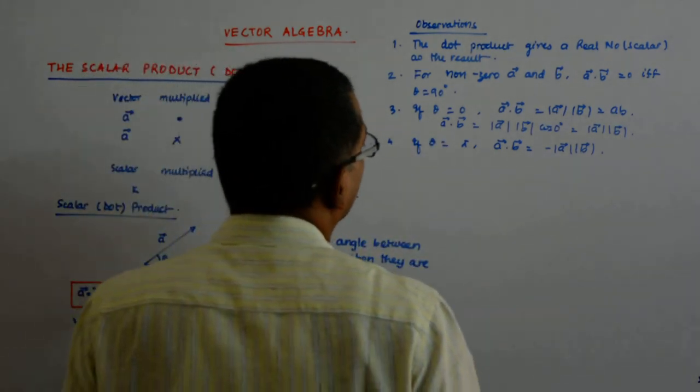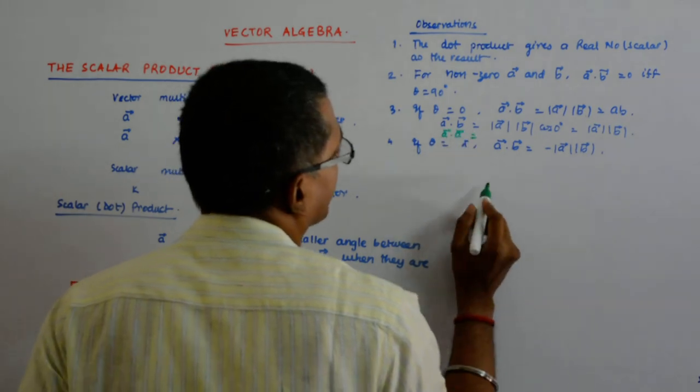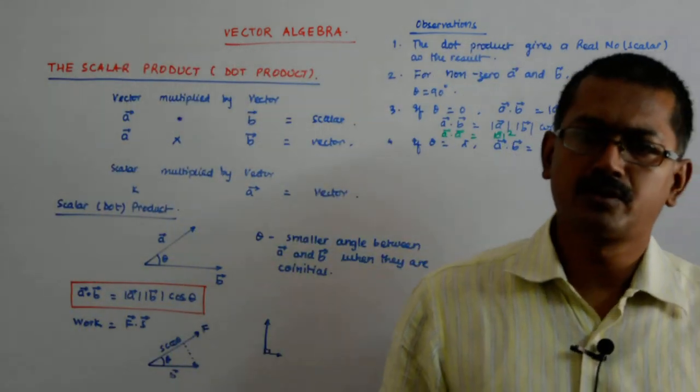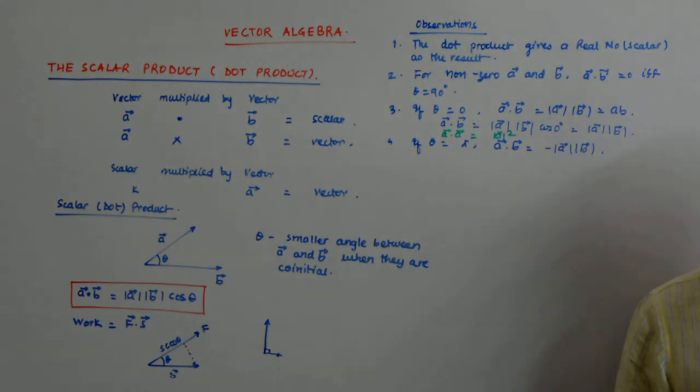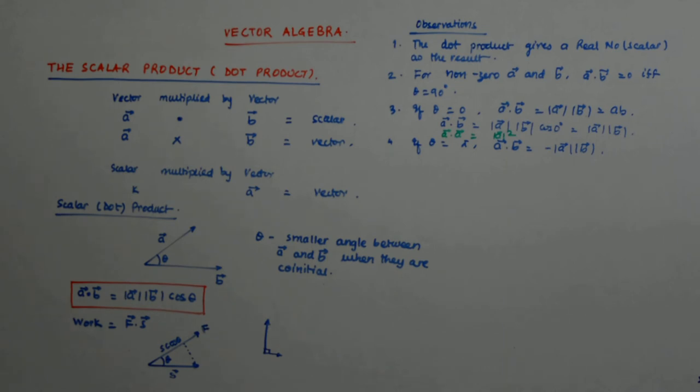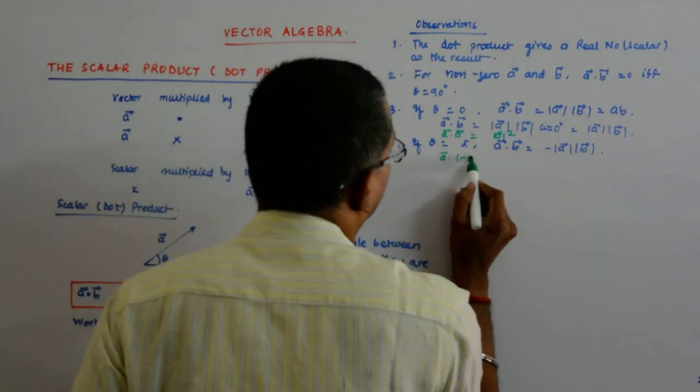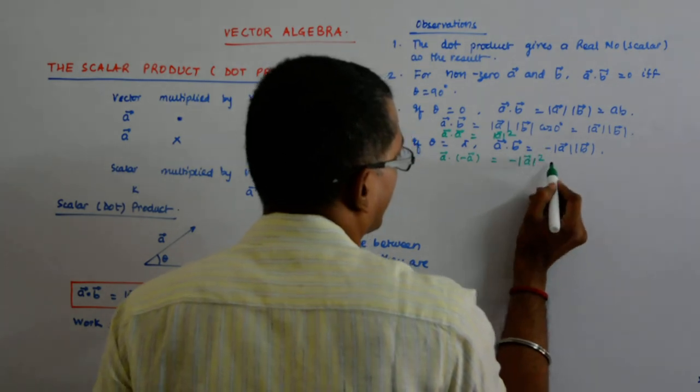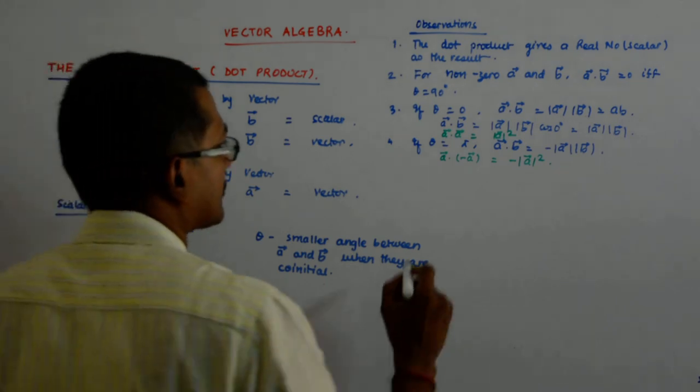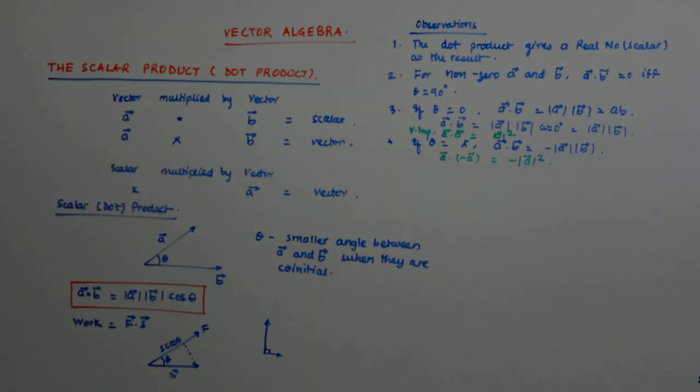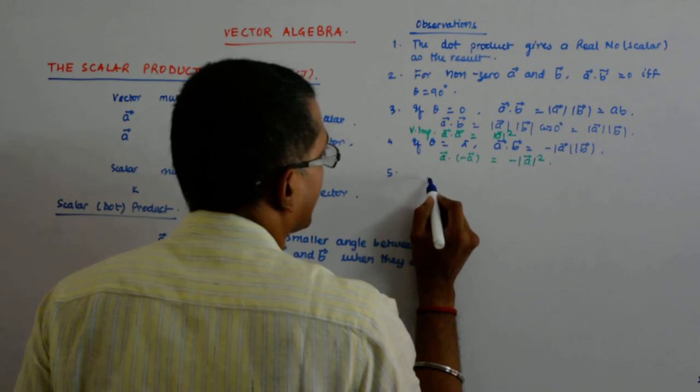See here, in the earlier one if you are dotting a vector with itself what happens? You get mod a squared and that is the way of finding out the square of the magnitude. We will do it soon. Similarly, here if I dot this with this, they are making an angle of 90 degree, so that should give me minus of mod a square. This is very, very important. This, you use it so many times. Now, if that is the case, can you tell me the values of this?